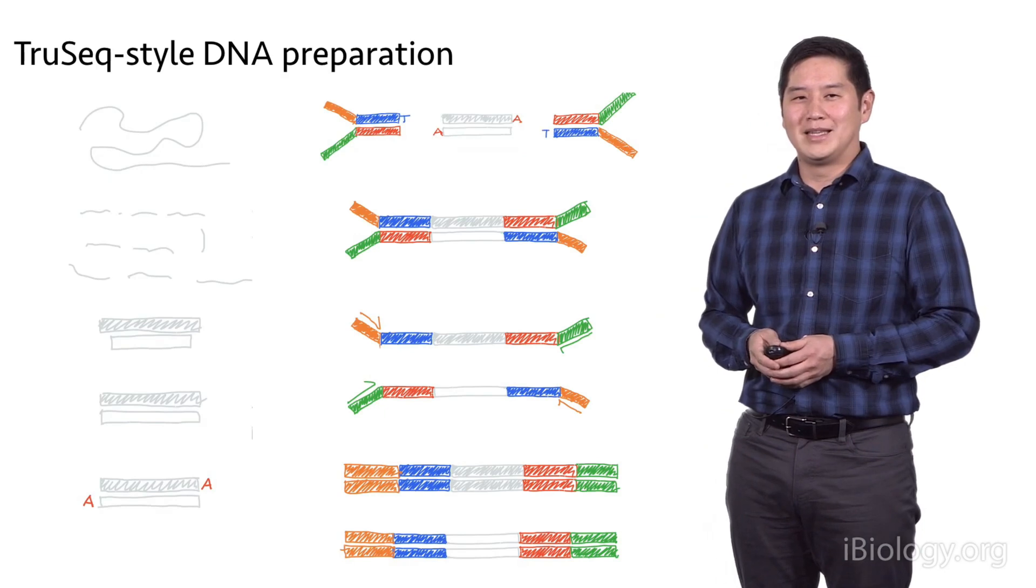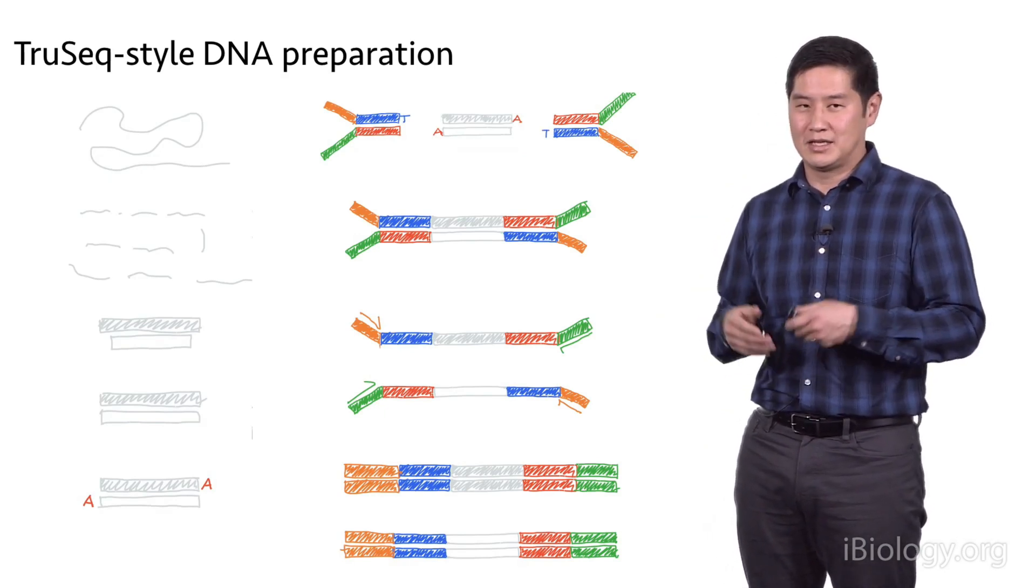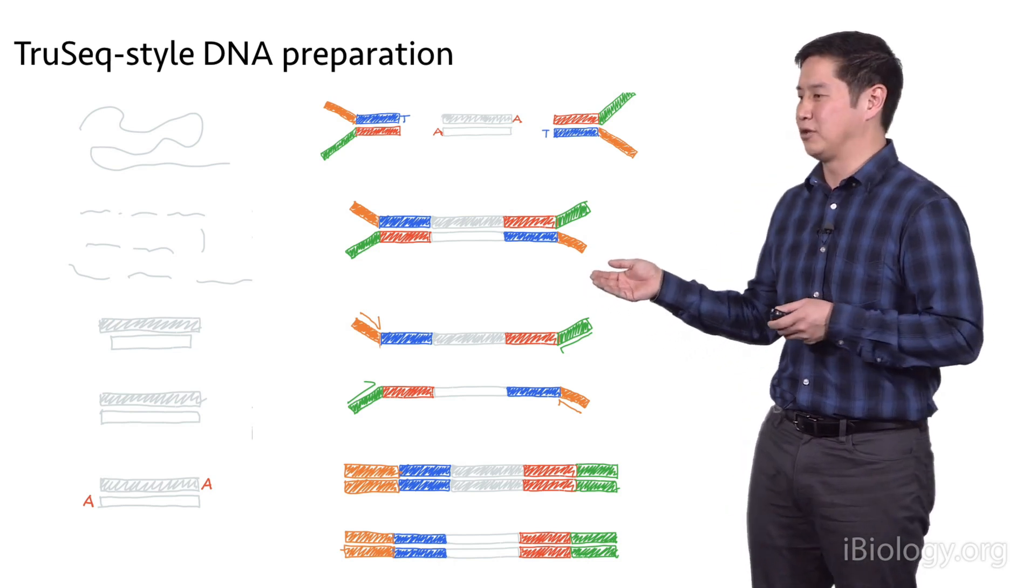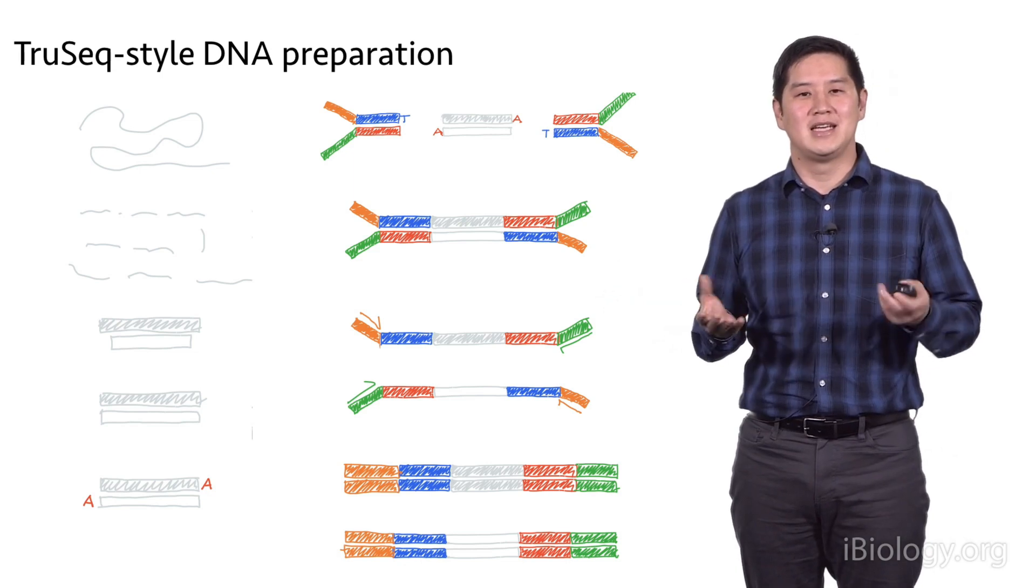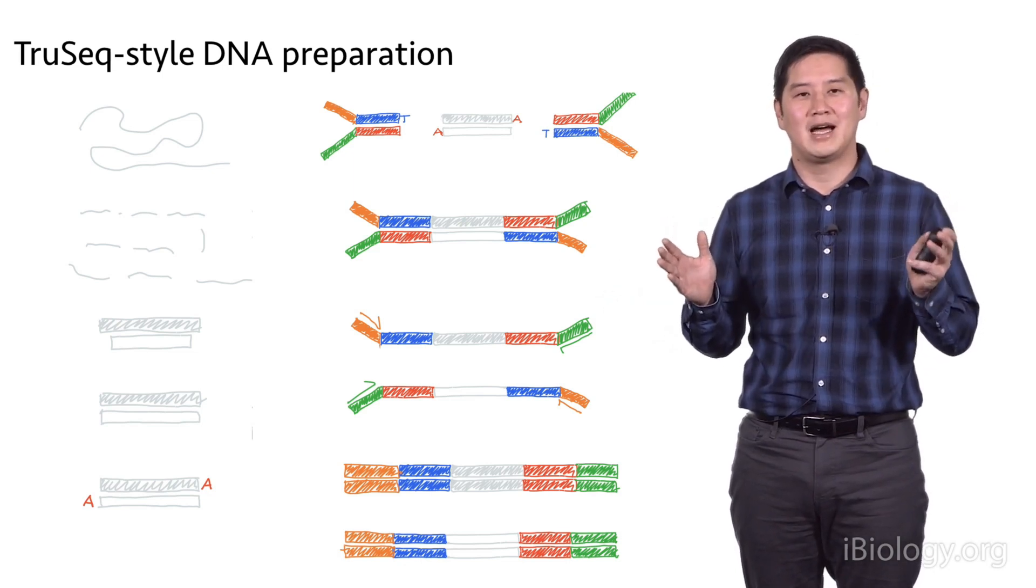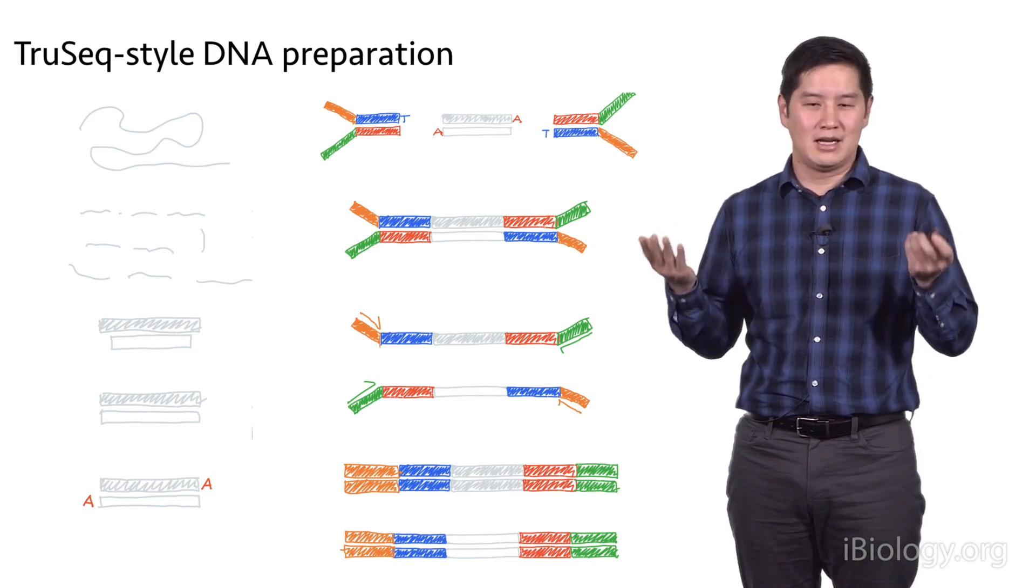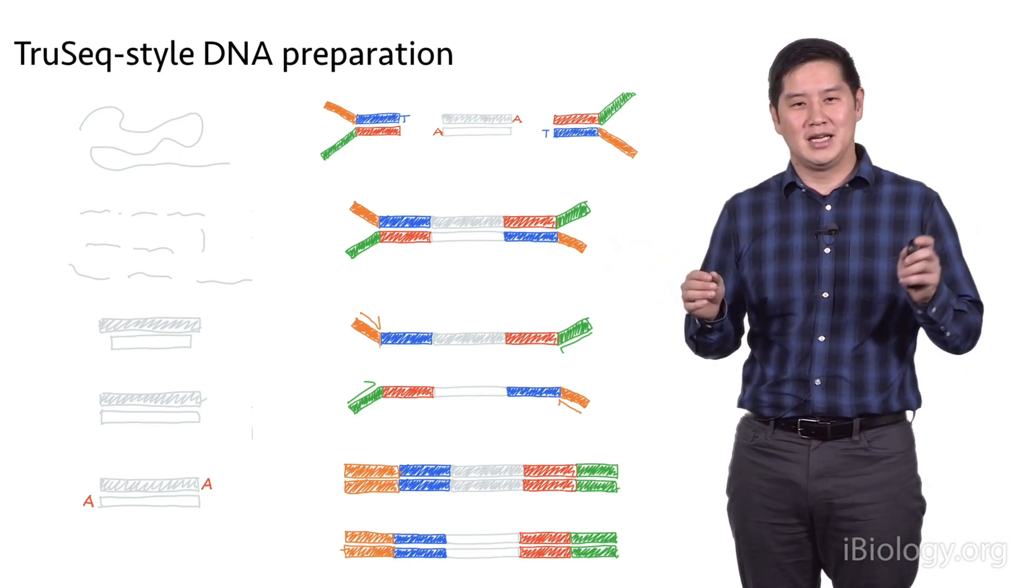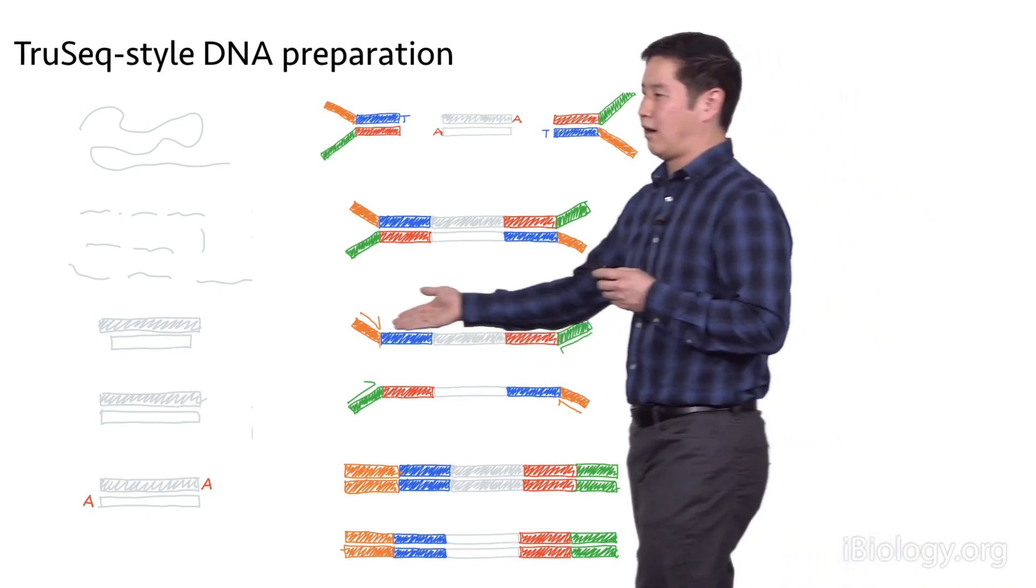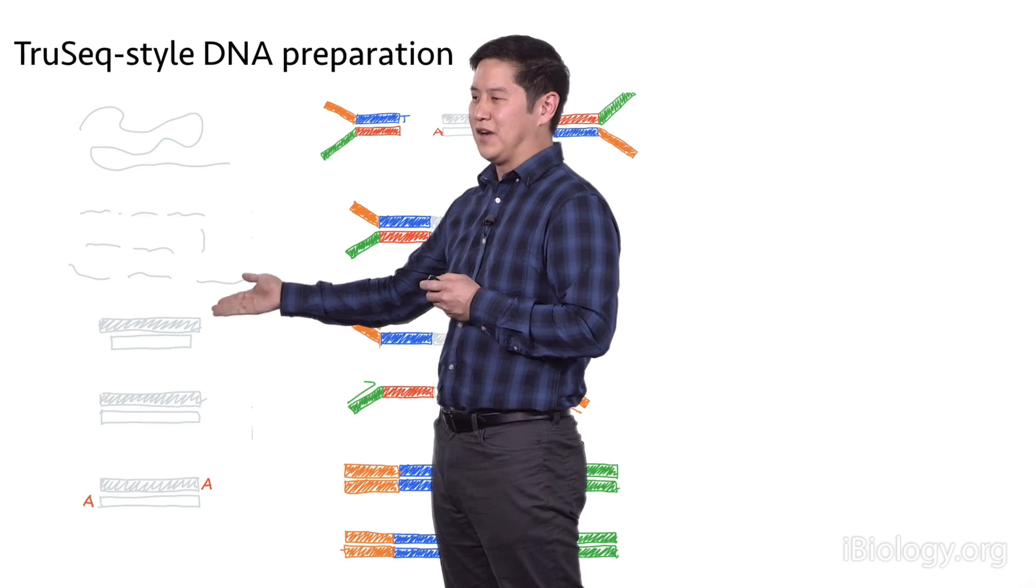With TruSeq-style DNA library preparation, you begin with DNA that's a long molecule depicted in gray. The first step is to fragment that DNA into smaller bits appropriately sized for the Illumina sequencers, generally in the hundreds of bases of length. This fragmentation results in DNA fragments that are not polished, so they have certain overhangs on different ends.